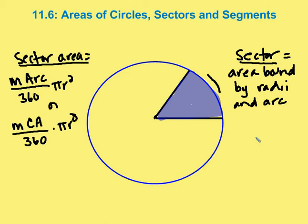In Chapter 11.6, we're going to talk about areas of circles, sectors, and segments. The area of a circle is equal to pi r squared.